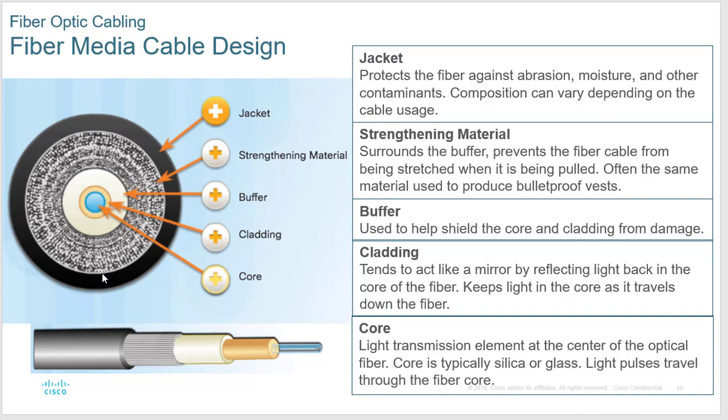The problem with fiber is you need a specialized kit to create the ends because it actually melts and burns the ends onto the cable. One student brought in a fiber splicing kit from Owens Corning — a thousand-dollar kit — and showed us making cables. Fiber is more expensive, and you have to be careful because of the glass core. If you bend a fiber cable 90 degrees you can crack the glass core and lose the signal, so be very careful laying and storing it.